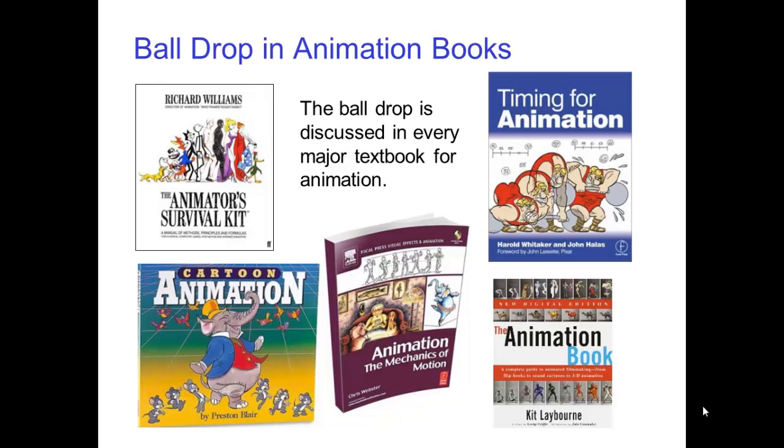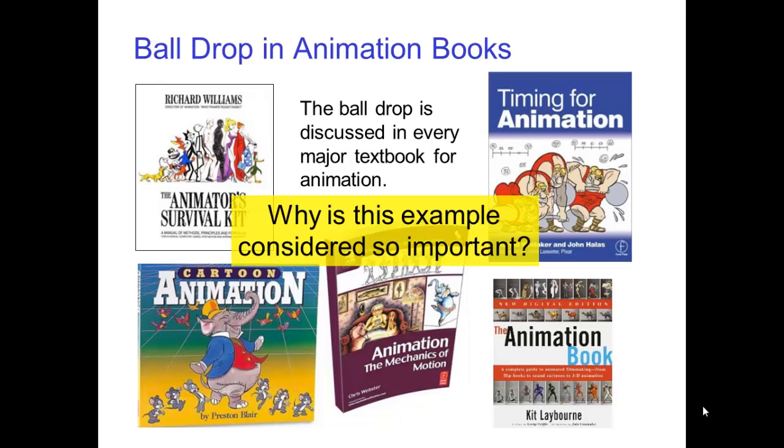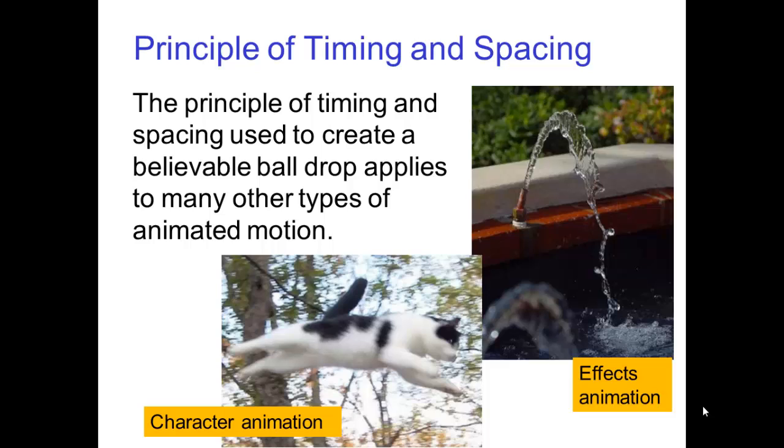The ball drop or ball bounce is presented as a basic exercise in every major textbook for animation. So you might ask, why is this example considered so important? It's important because the principle of timing and spacing used to create a believable ball drop applies to many other types of animated motion. For example, the character animation of a jumping cat or the effects animation of a stream of water.